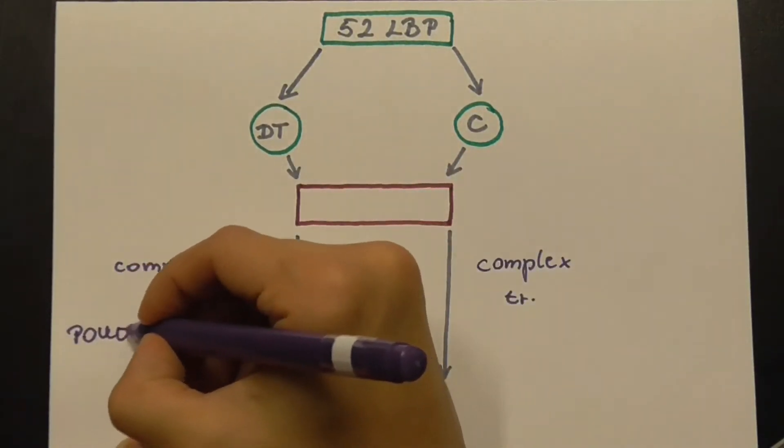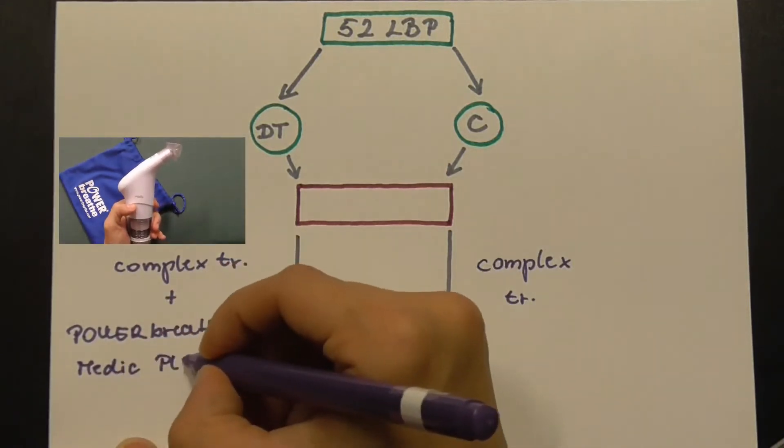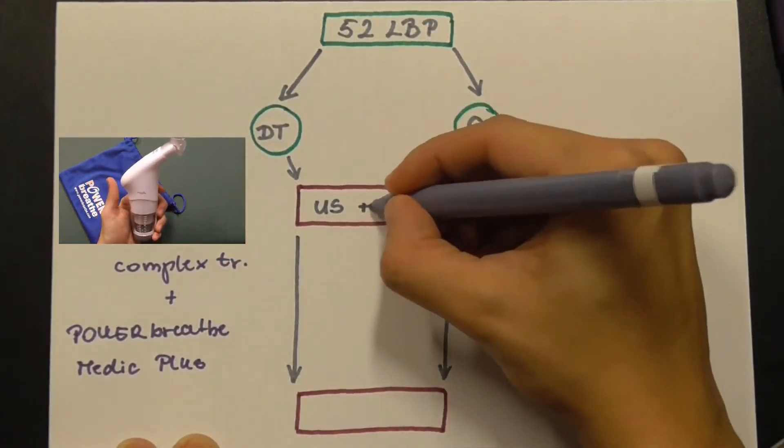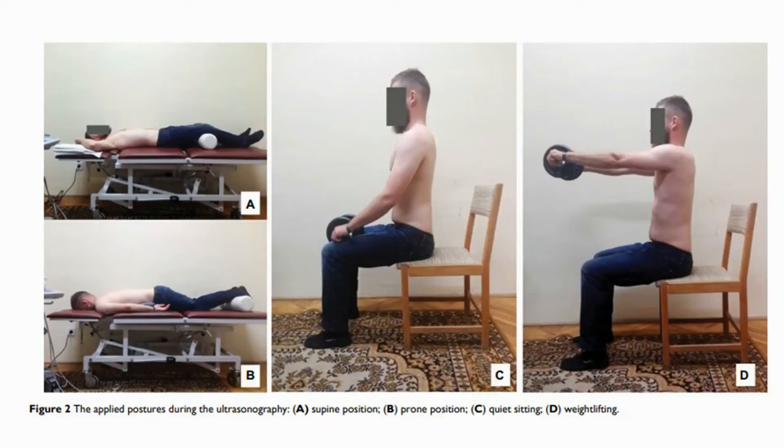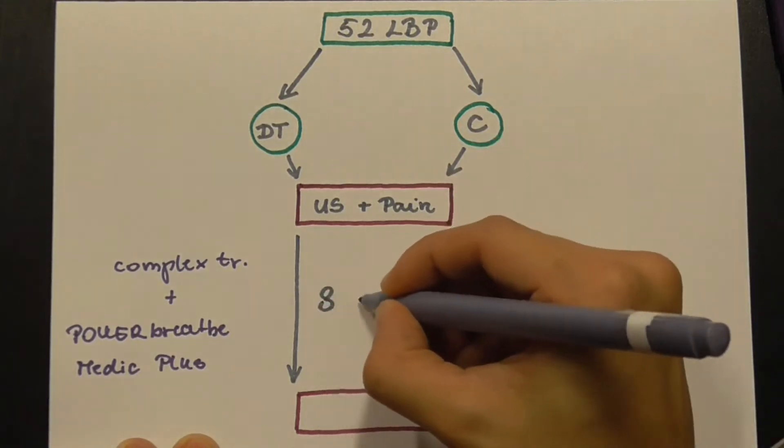the diaphragm training group used a Power Breathe Medic Plus device. All participants were subjected to ultrasonography to measure the thicknesses of the stabilizer muscles in two positions, lying and sitting, and in two states of the muscles, contraction and relaxation.